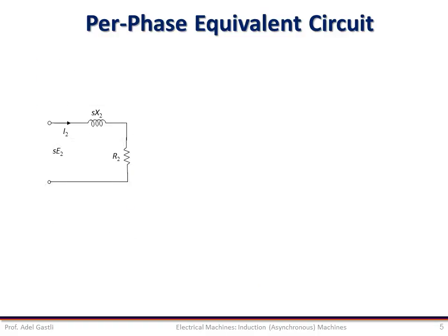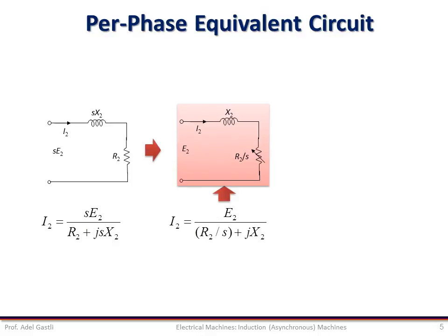Therefore, the rotor equivalent circuit per phase shows the rotor current I2 expressed by the corresponding equation. If we divide the numerator and denominator by the slip S, the current equation can be rearranged accordingly. Moreover, we can represent the equivalent rotor resistance R2/S by two resistances: one constant R2, and another one that is a function of the slip, as shown by this equation.